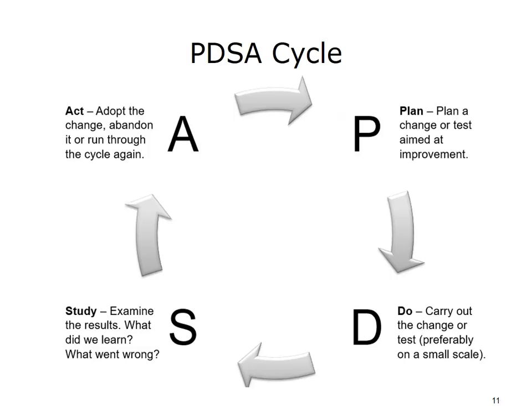Edward Deming derived what became known as the Deming Wheel, Deming Cycle, or Deming Circle from Walter Shewhart's 1939 straight-line, three-step scientific process of specification, production, and inspection. Deming presented it as a circle to stress the importance of constant interaction among the four steps of design, production, sales, and research. The PDCA Plan-Do-Check-Act cycle is often attributed to Deming and Shewhart, but Deming denied this connection. However, in 1993, Deming presented an evolved version of the cycle as the Shewhart Cycle for Learning and Improvement, calling it the PDSA Plan-Do-Study-Act cycle.